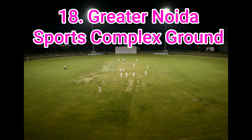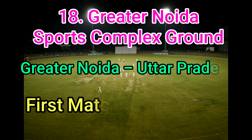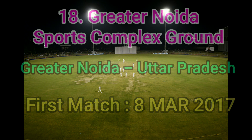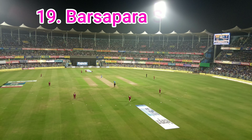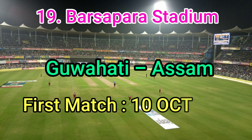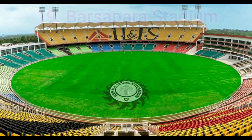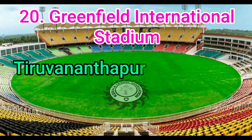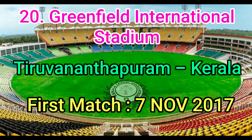Greater Noida Sports Complex Ground, Greater Noida, Uttar Pradesh. First International Match played on 8th March 2017. Barsapara Stadium, Guwahati, Assam. First International Match played on 10th October 2017. Greenfield International Stadium, Thiruvananthapuram, Kerala. First International Match played on 7th November 2017.